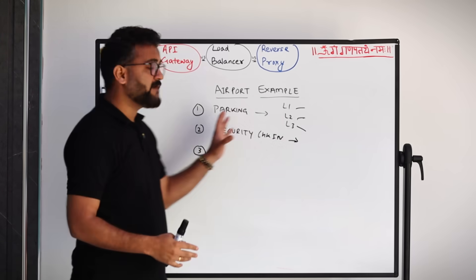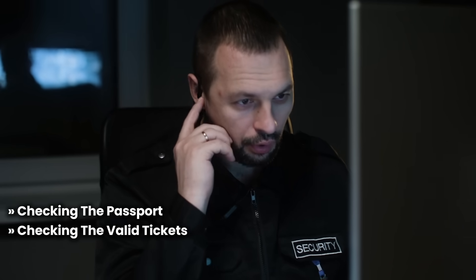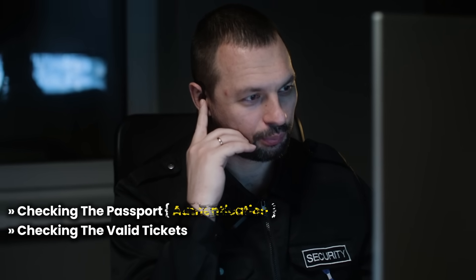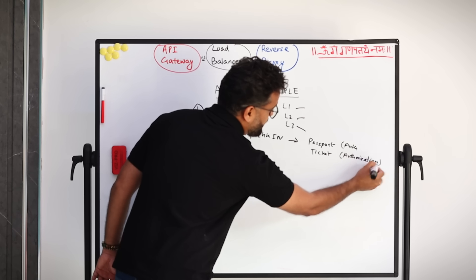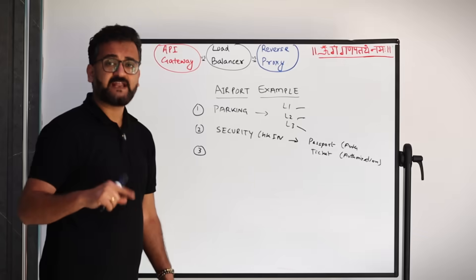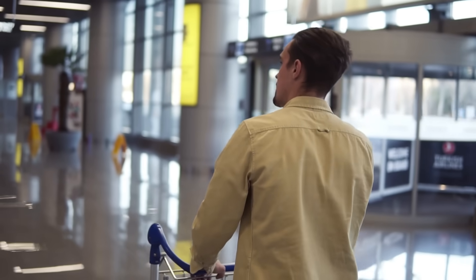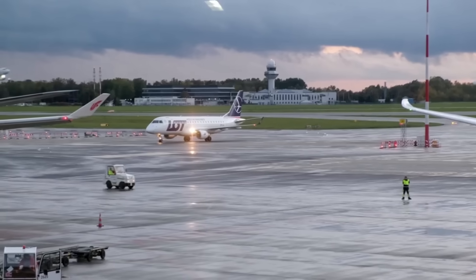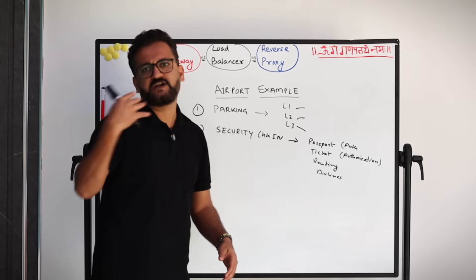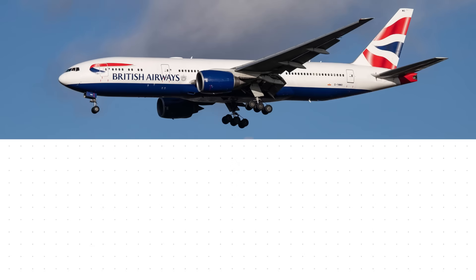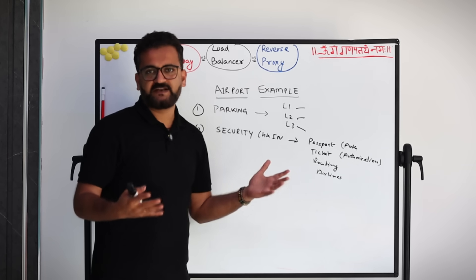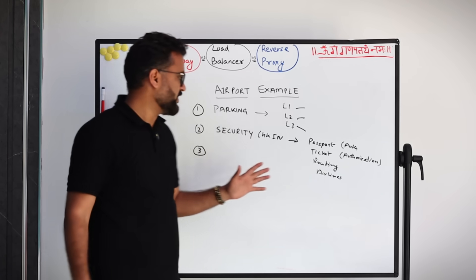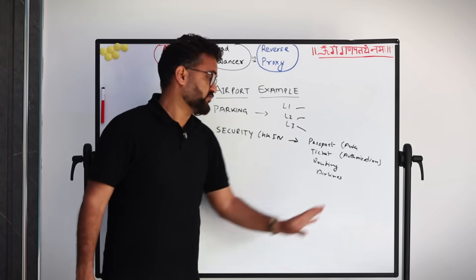The second one is the security check-in, which is slightly different. Whoever is coming, security check-in first checks their passport and valid tickets — that's your authentication and authorization. They also tell you which route to go to reach a specific airline, which is your routing. It manages multiple international airlines like British Airways, Qatar, Turkish Airlines, and Emirates.